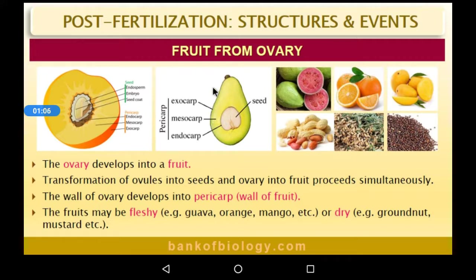Fruits may be fleshy, like orange and mango, or they can be dry, like groundnut and mustard. So fruits may be fleshy or dry.